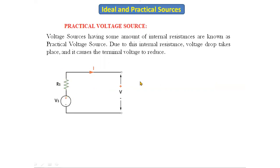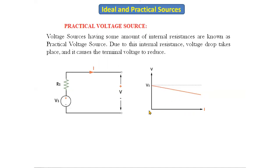If you see the characteristics of the practical voltage source: on the x-axis we take current and on the y-axis we take voltage. As we increase the current continuously, there is a slight drop in the voltage — as current increases, voltage decreases slightly. There is a change in the voltage here, whereas in the ideal case the voltage was constant. This drop is because of the internal resistance. That's why it is called a practical voltage source.